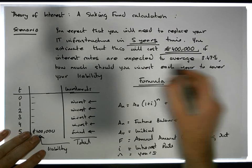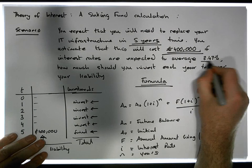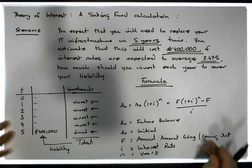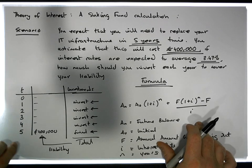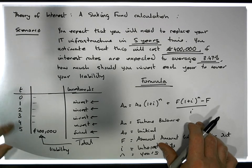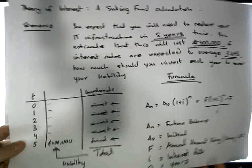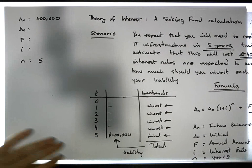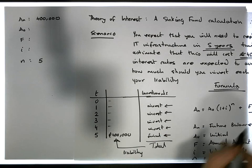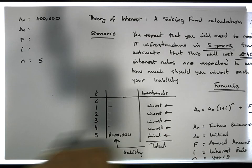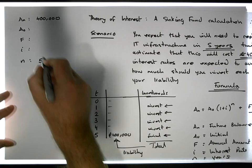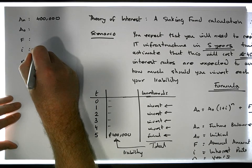We're also told that the interest rate is 3.47%, so i equals 3.47 divided by 100, which gives us 0.0347.